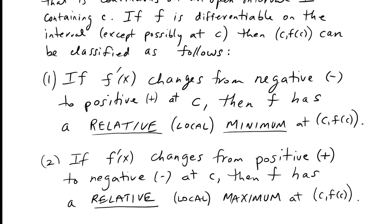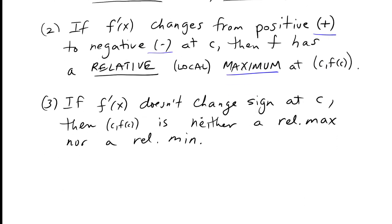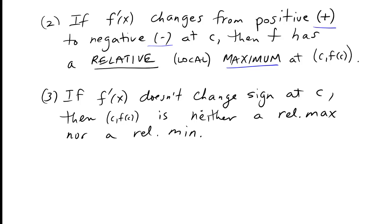If f prime of x changes from negative to positive at c, then f has a relative minimum — or local minimum if you prefer — at (c, f(c)). If f prime of x changes from positive to negative at c, then f has a relative maximum at (c, f(c)). And if f prime of x doesn't change sign at c, then (c, f(c)) is neither a relative max nor a relative min.